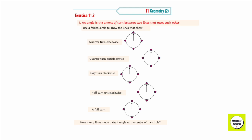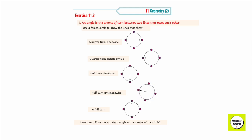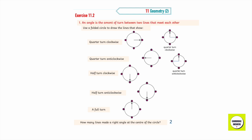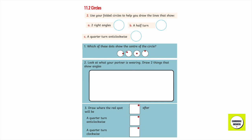Exercise 11.2. An angle is the amount of turn between two lines that meet each other. Use a folded circle to draw the lines that show a quarter turn clockwise, a quarter turn anti-clockwise, half turn clockwise, half turn anti-clockwise, and a full turn. How many lines make a right angle at the center of the circle? Two. Use your folded circles to help you draw the lines that show two right angles, a half turn, and a quarter turn anti-clockwise.